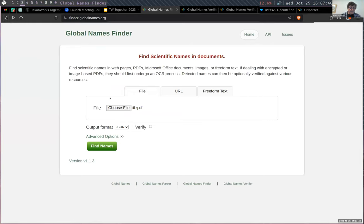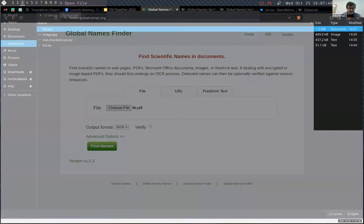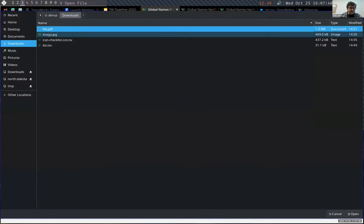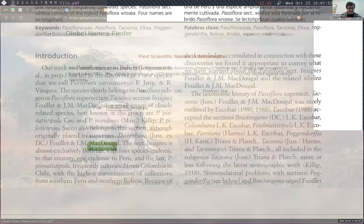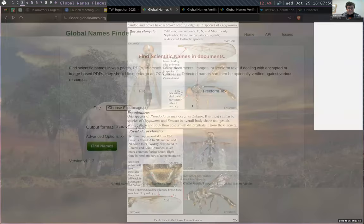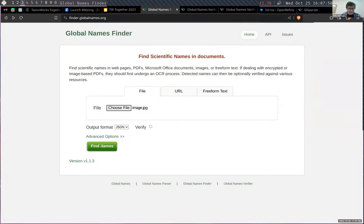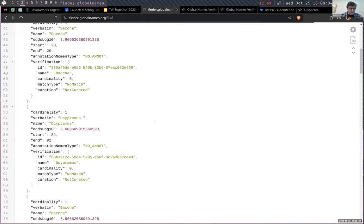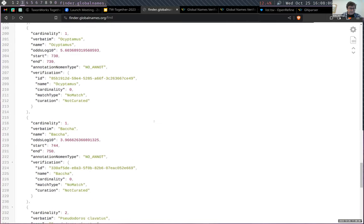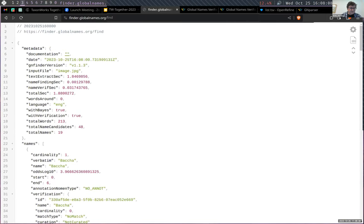You can use just the plain text, you can use PDF, you can use Word document. Let's say I want to find names in an image. So there is an image, it looks like that, and I want to find names in the image. I click Find, it takes a little longer because the image needs to be processed. Yeah, you still can find names that exist in this image.